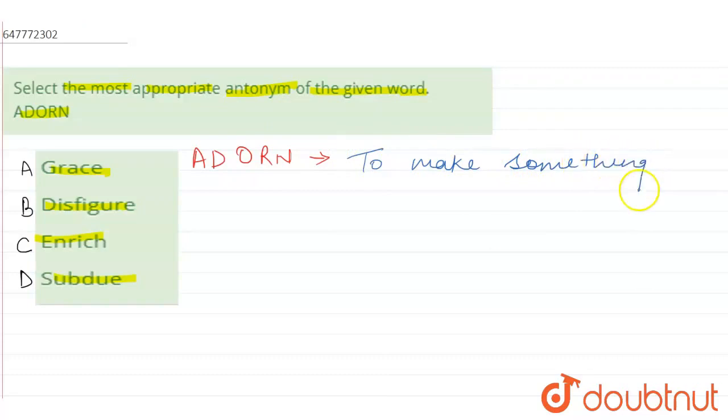Adorn means to make something more attractive, which is very attractive. Now, we need the opposite meaning.